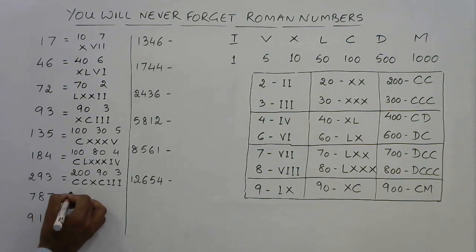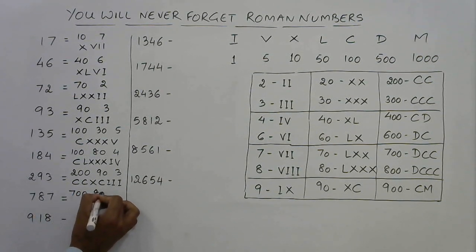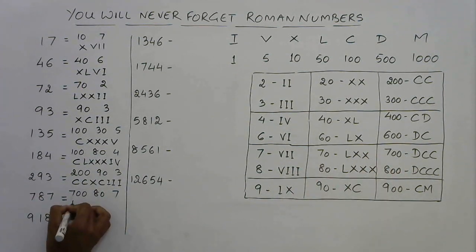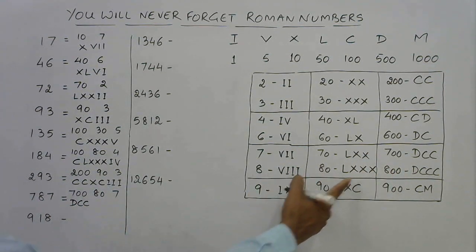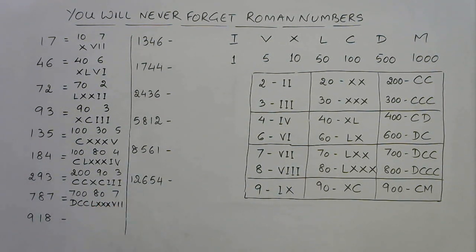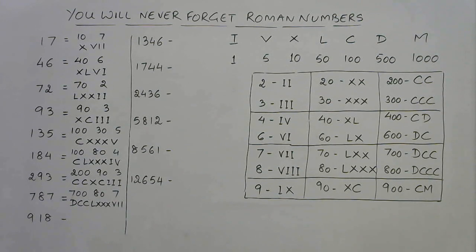For 787: 700 is DCC, 80 is LXXX, and 7 is VII, so 787 is DCCLXXXVII.